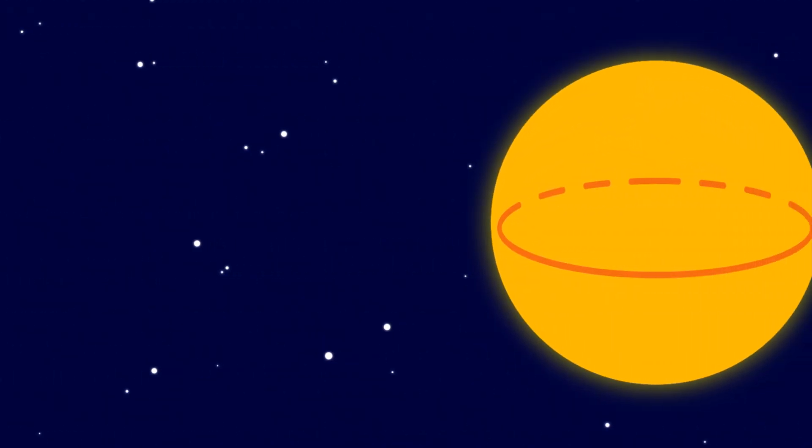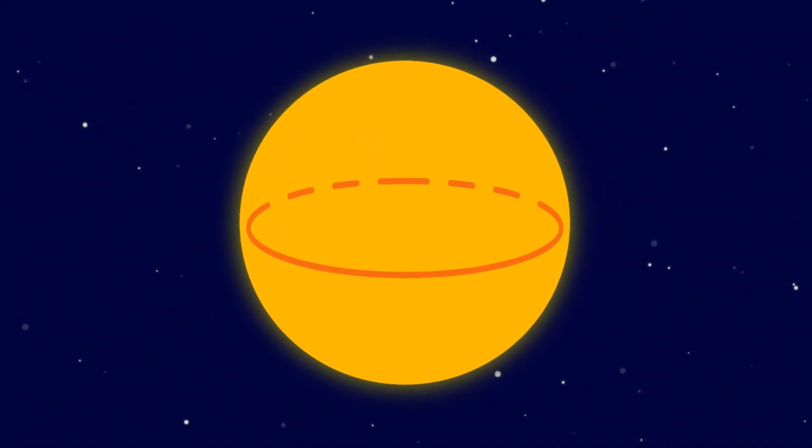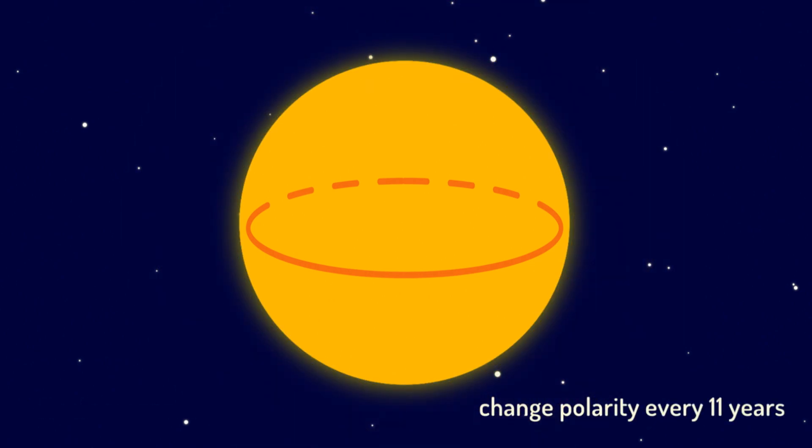This phenomenon can be understood through tracing the motion of individual magnetic field lines. Like the Earth, our sun also rotates and has dipole magnetic fields that change polarity every 11 years, known as the solar cycle.